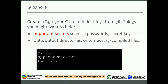Those of you that have worked with Python are probably used to seeing .pyc files. These are bytecode compiled files that Python will compile on the fly and store on the file system. We don't want these in our Git repository, so if we put a *.pyc line in our .gitignore file, it will tell Git to ignore all of those — it won't show them in git status and we won't accidentally add them.